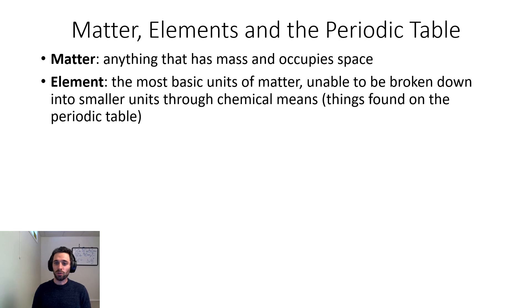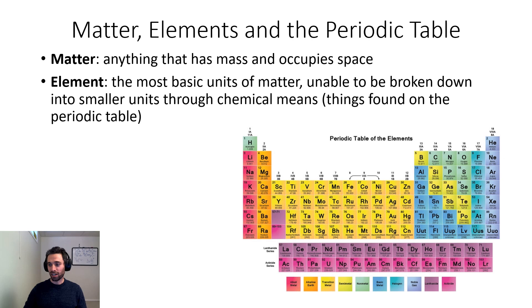Element: an element is the most basic unit of matter, unable to be broken down into smaller units through chemical means. Simply, these are things found on the periodic table. I'll probably have a more in-depth video about the periodic table, but this is the periodic table consisting of all the known elements that exist here on planet Earth.